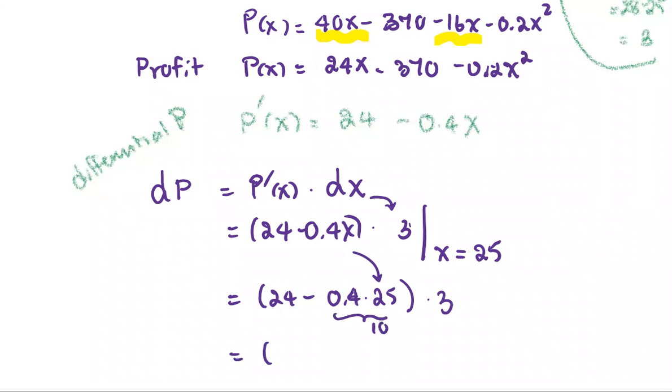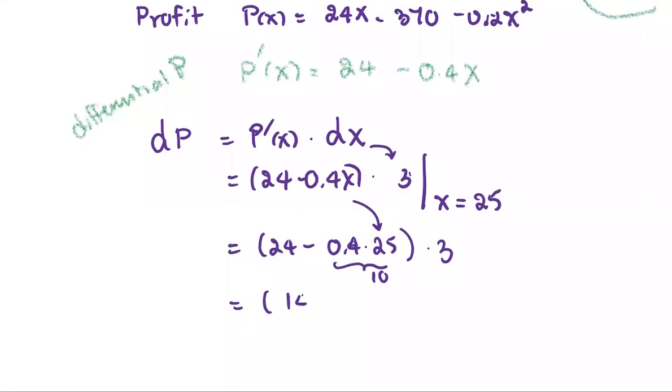We get 24 minus 10 or 14, and then multiply by 3. So we get the number 52 as a result for the differential P, that is used to approximate the change in P.